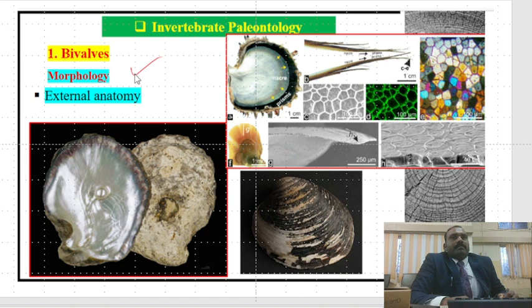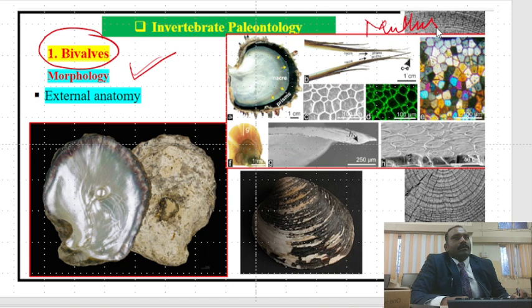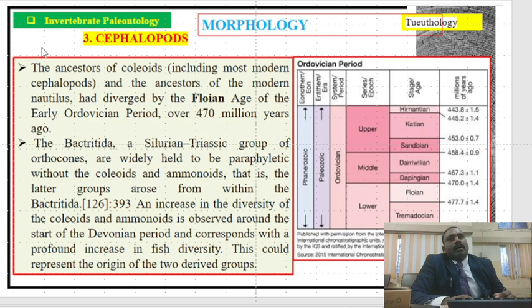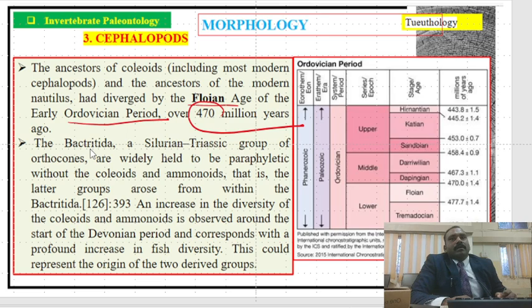Now coming to the study of invertebrate paleontology: the first phylum to be discussed is bivalves, belonging to Mollusca. Molluscs are supposed to be primitive living organisms that came to the planet before gastropods and cephalopods. The cephalopods are supposed to be the ancestors of the sepioids, including the most modern cephalopods. The ancestors of the modern nautilus diverged from the Floian age of the early Ordovician period, over 470 million years ago.